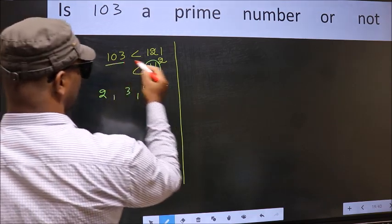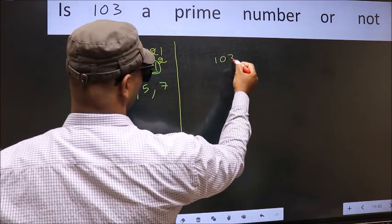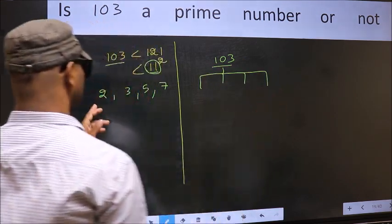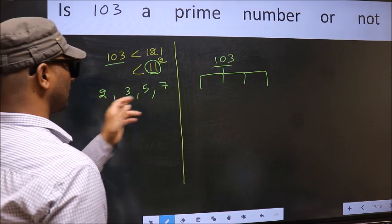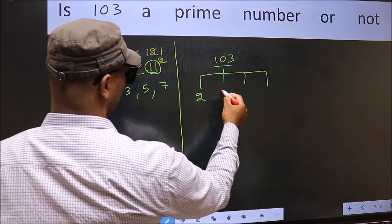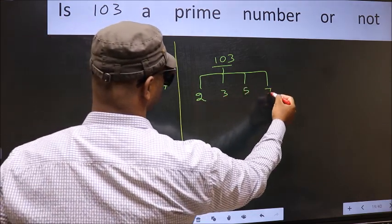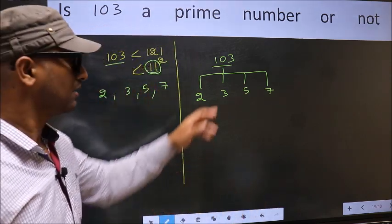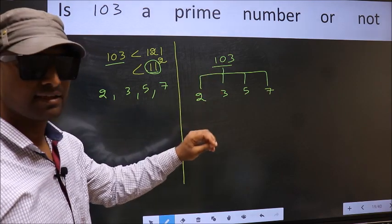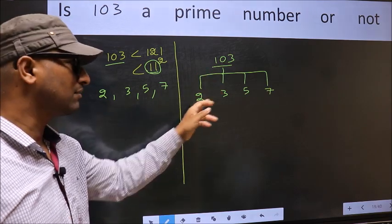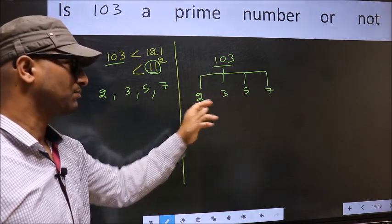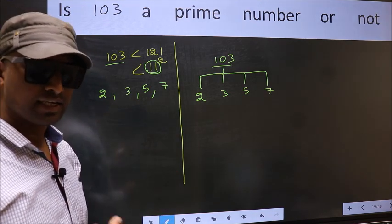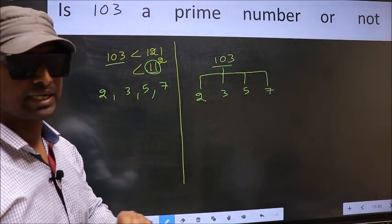Now, for the given number, we should check divisibility by these numbers: 2, 3, 5, and 7. If the given number is divisible by any one of these numbers, we say it is not a prime number. Otherwise, it is a prime number.